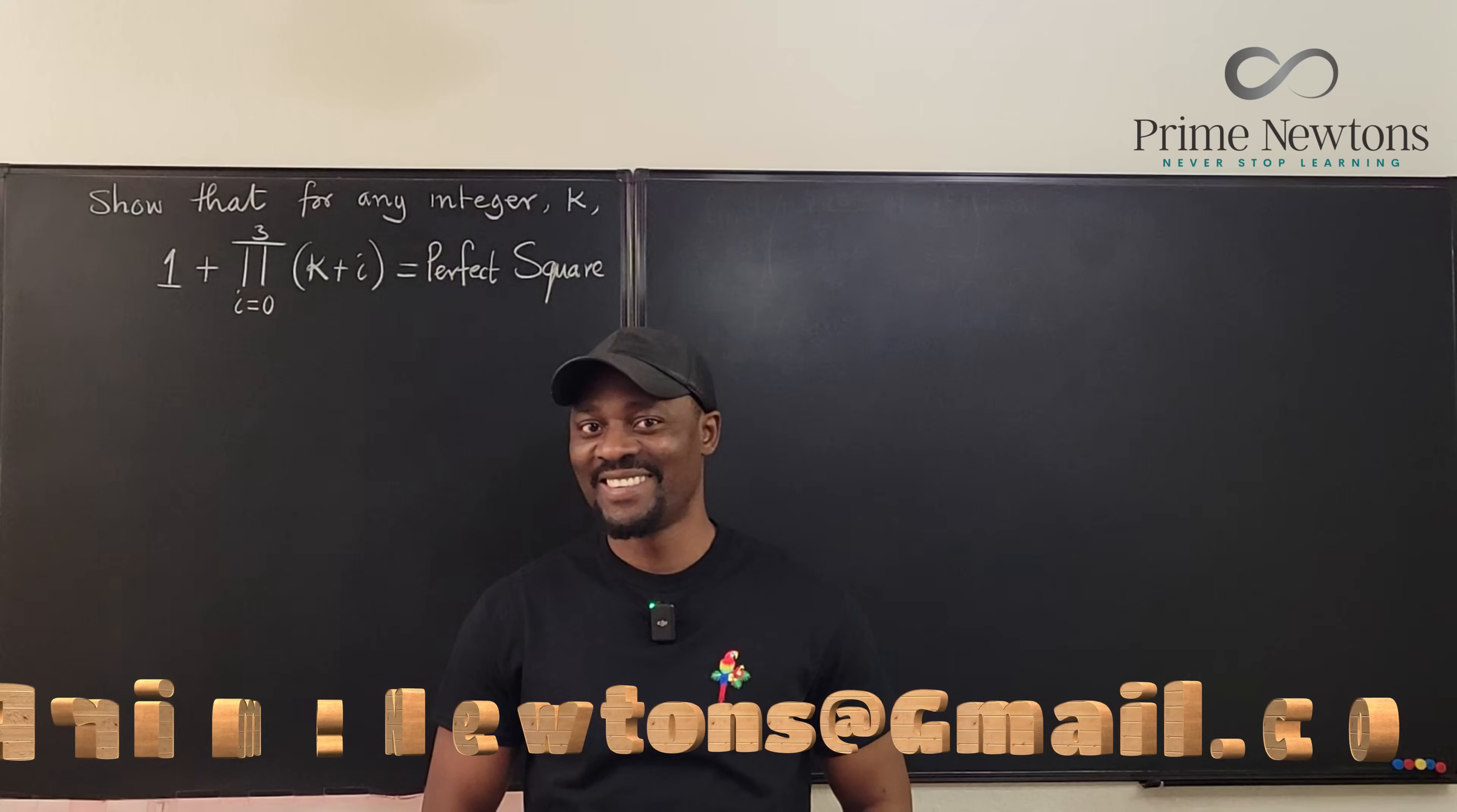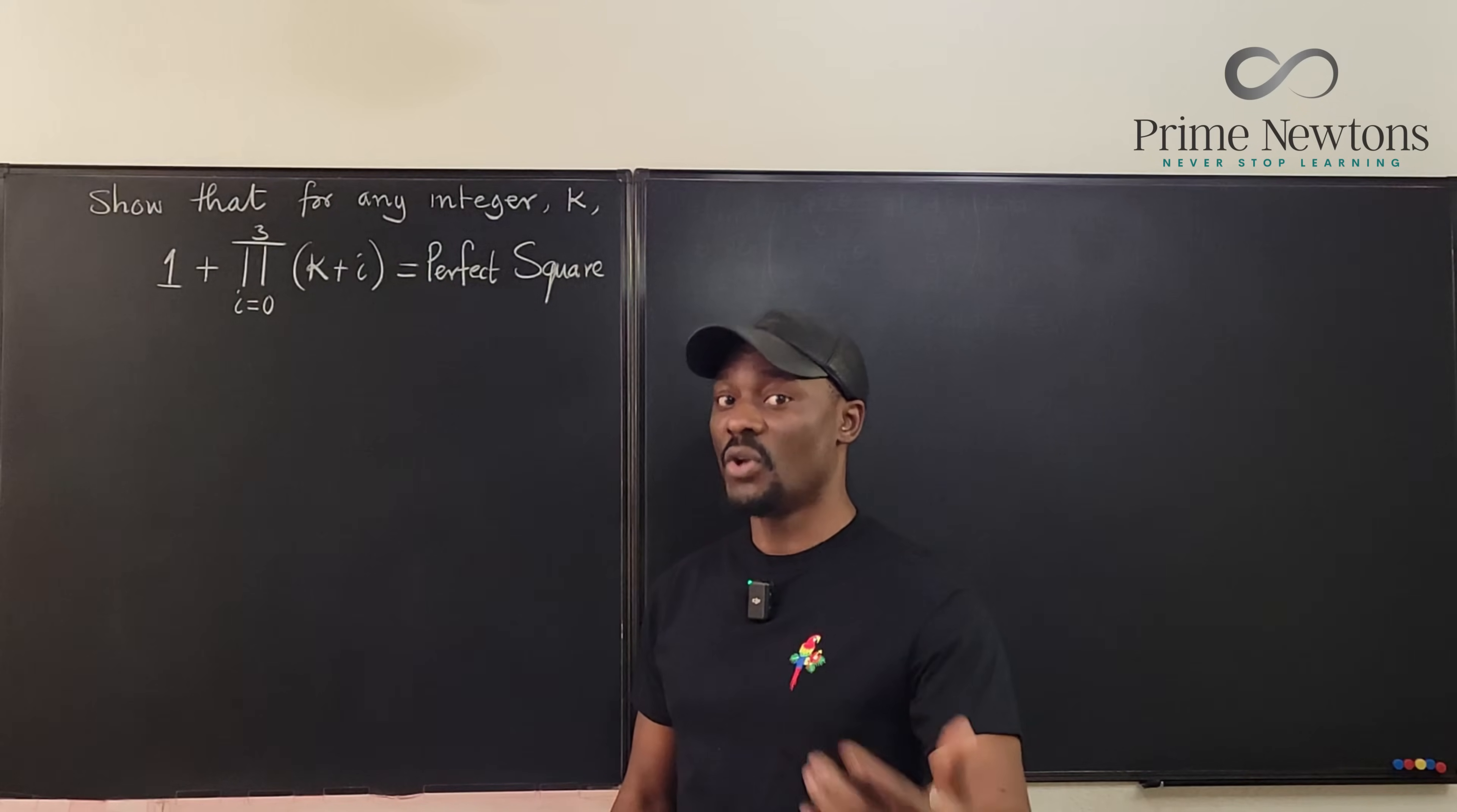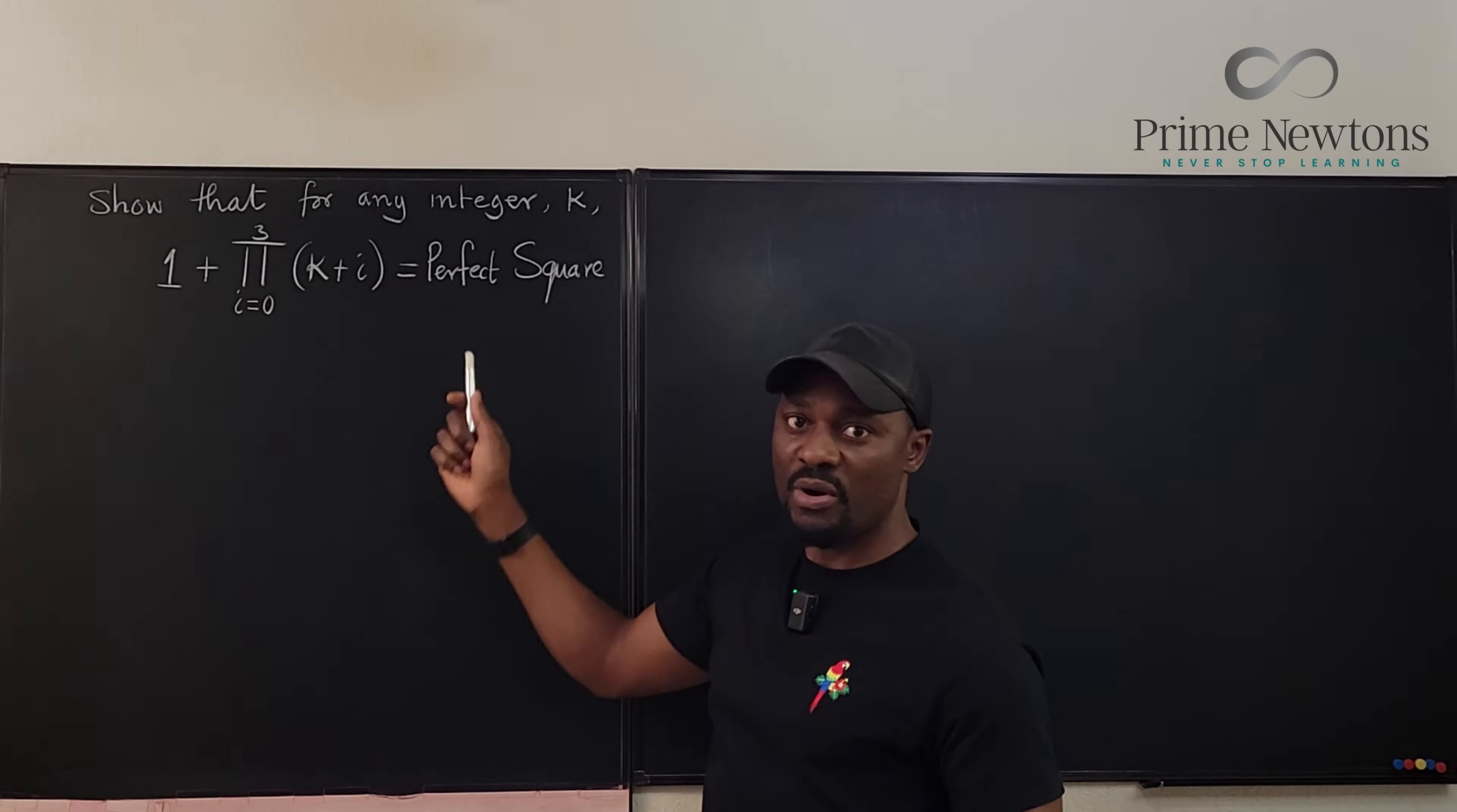Welcome to another video. There are two potential problems with this problem. The first one is being able to interpret what the problem is, and the second one is being able to solve the problem. Looking at this, we're told to show that for any integer k, 1 plus this notation is equal to a perfect square.